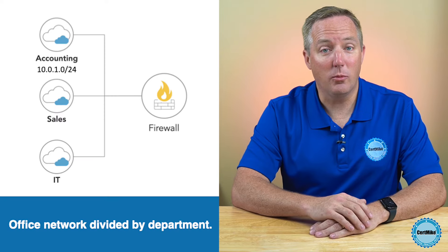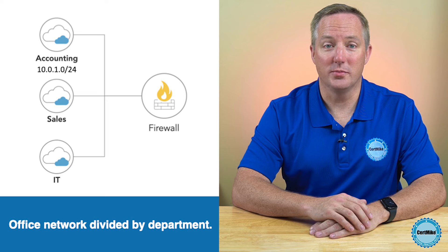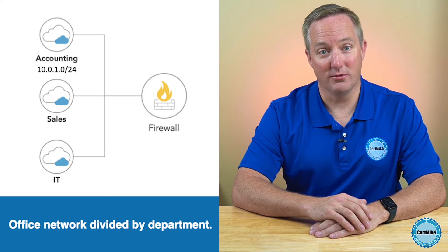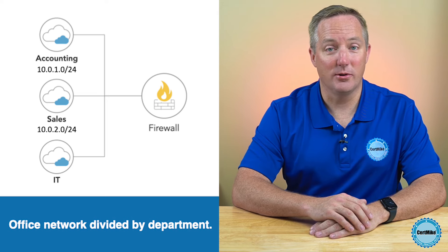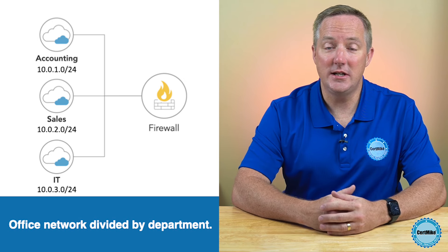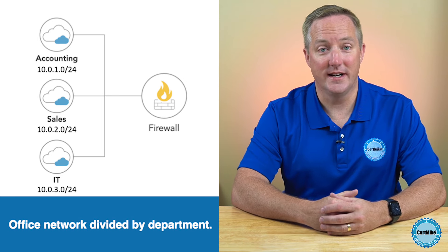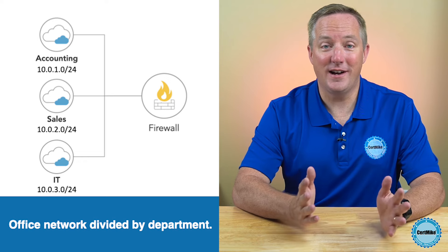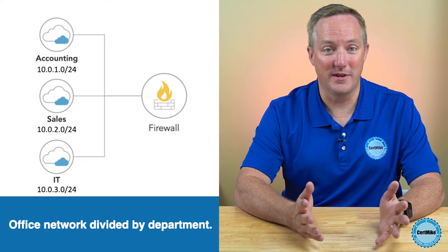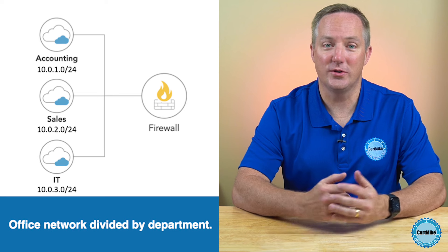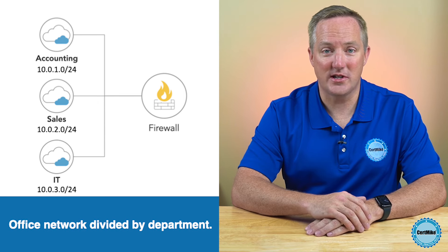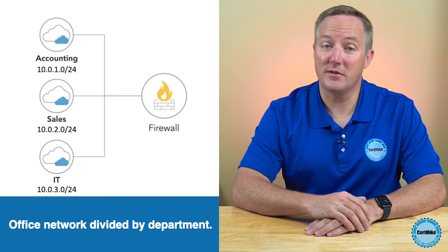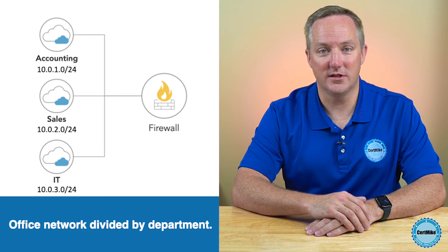In our network diagram, we can give the accounting group the 10.0.1.0 address space, the sales group the 10.0.2.0 address space, and the IT group the 10.0.3.0 address space, leaving the remaining 65,533 subnetworks for future uses. Each of those subnetworks can have up to 254 systems connected to it.